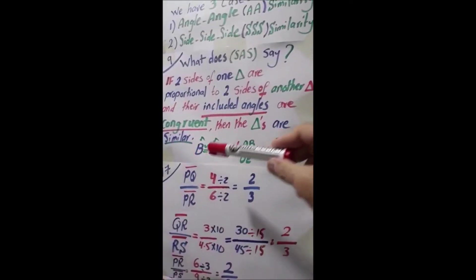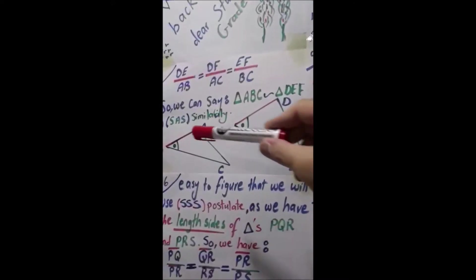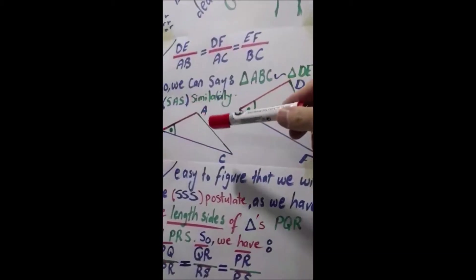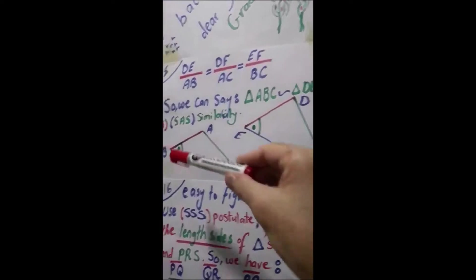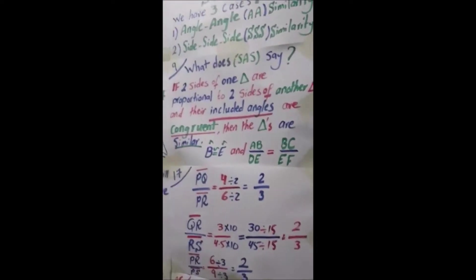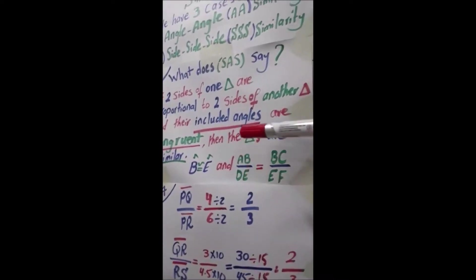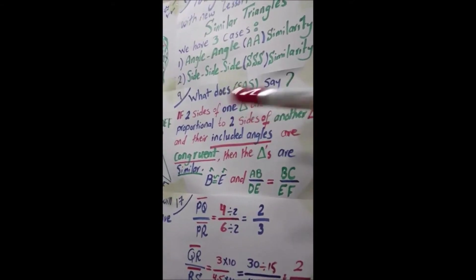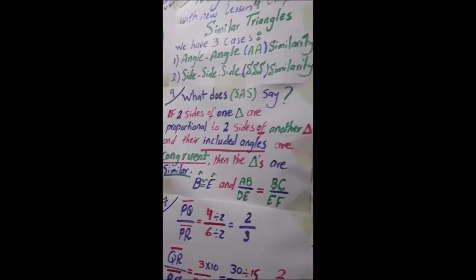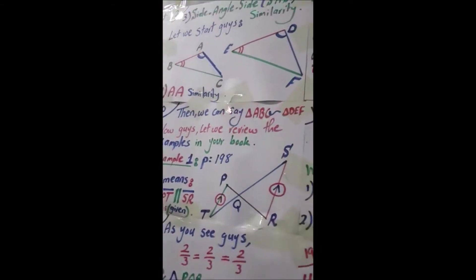So this postulate says: angle B and angle E are congruent, and AB/DE = BC/EF — meaning they are proportional. We do not take AC with DF because we only care about AB, DE and BC, EF. If these two angles are congruent and AB/DE = BC/EF, then these two triangles are similar by using side-angle-side.